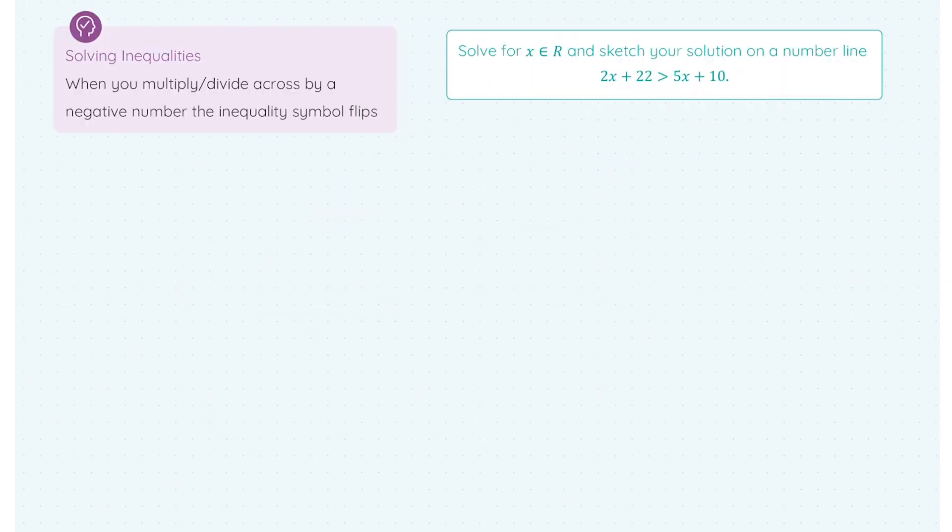Last up, let's throw this situation into the real numbers where I'm asked to solve for x an element of the reals and sketch your solution on a number line. Just a gentle reminder that your real numbers are every number on the number line. It's every number, positive, negative, whole, fractions, decimals, the works. So we've 2x + 22 > 5x + 10. I'm going to get solving here.